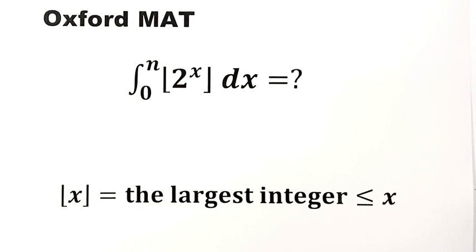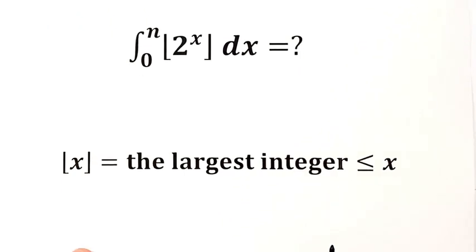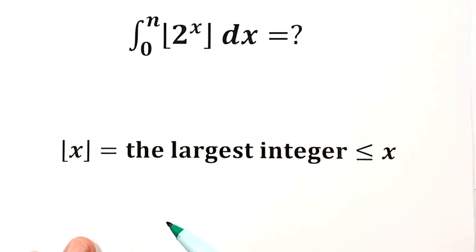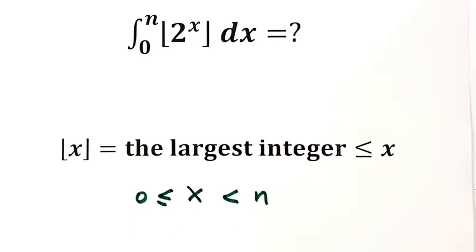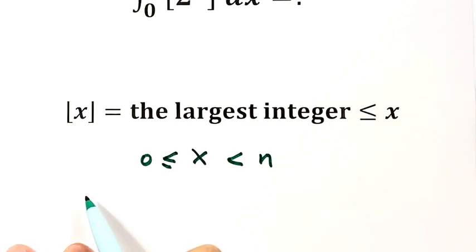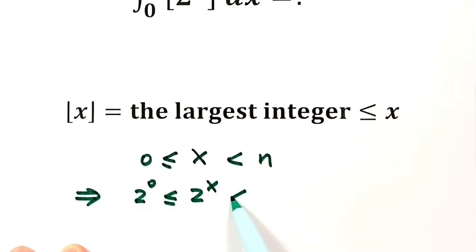Now let's begin with our question. Because the lower bound is 0 and the upper bound is n, that means x is bigger than or equal to 0 and less than n. So that means 2 to the x is bigger than or equal to 2 to the power 0, and less than 2 to the power n.